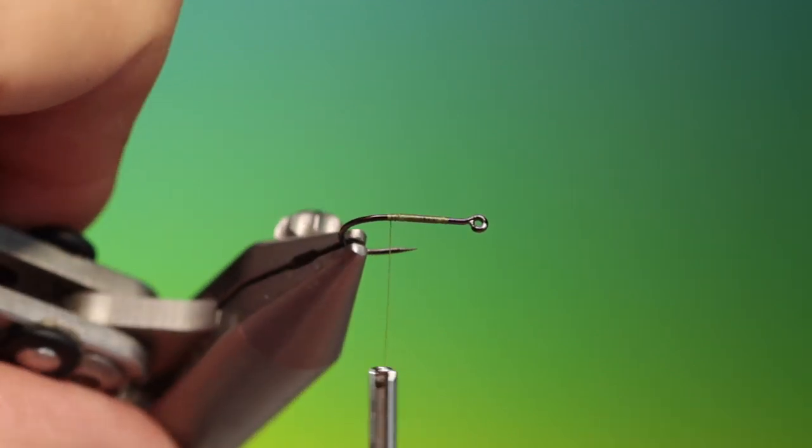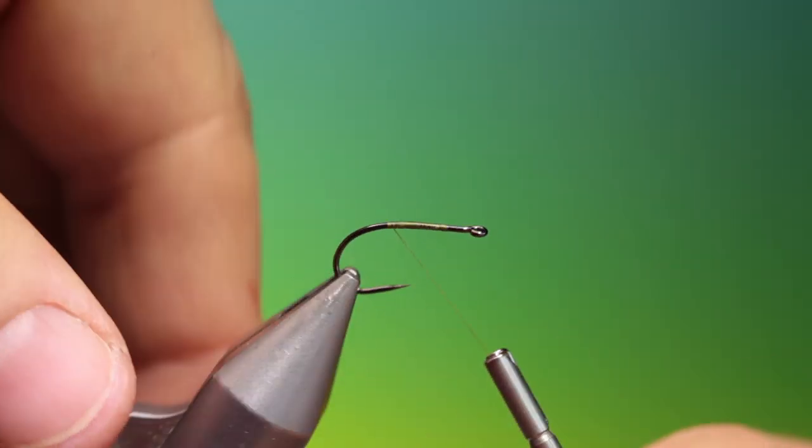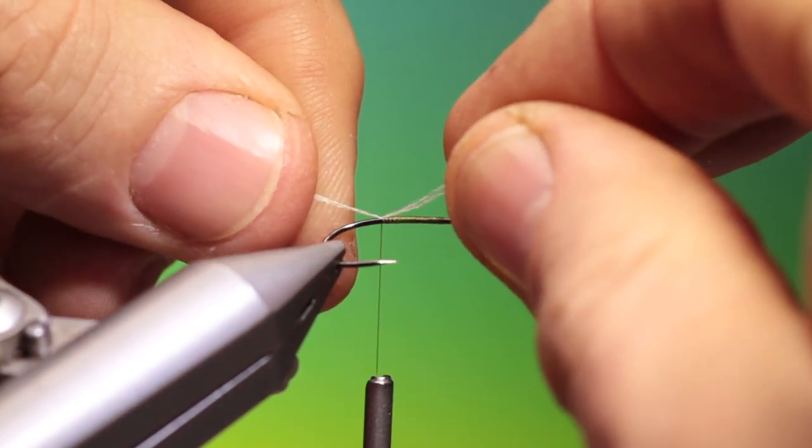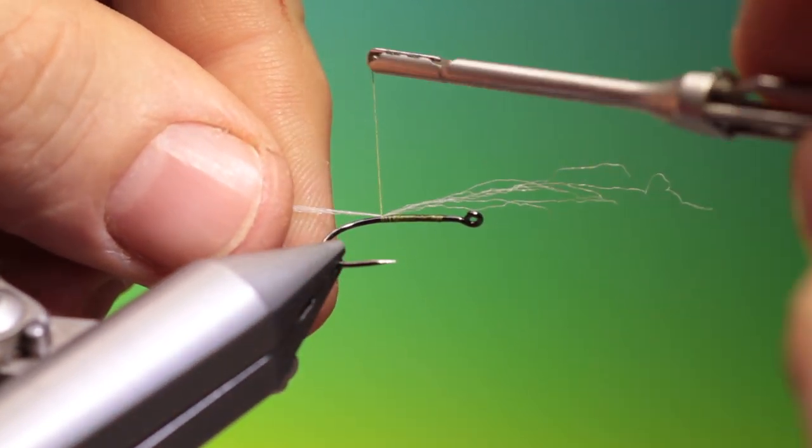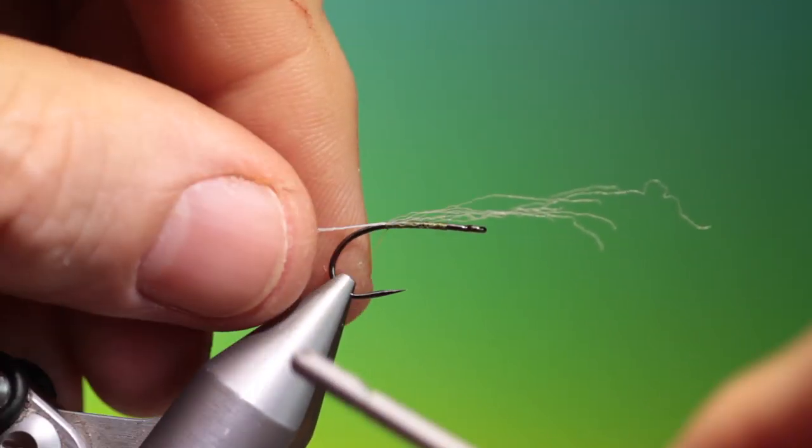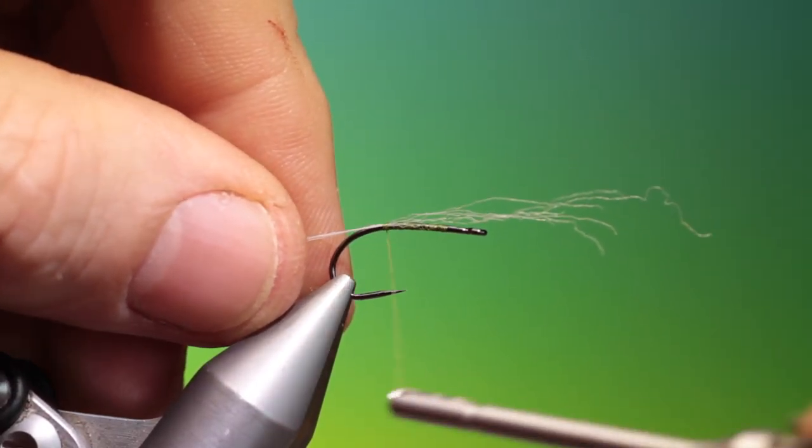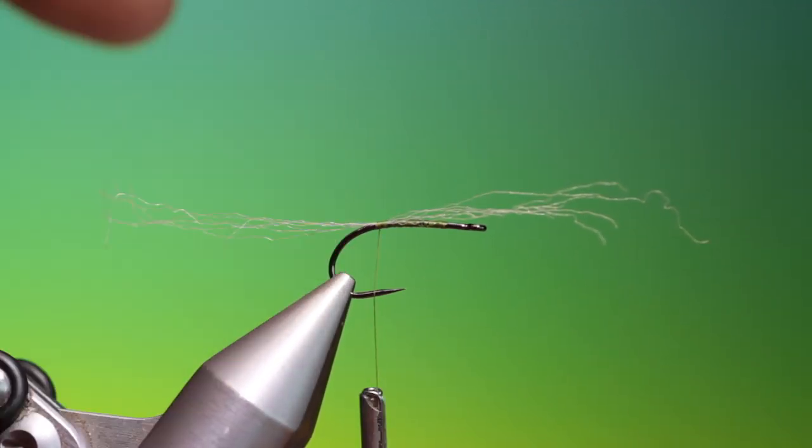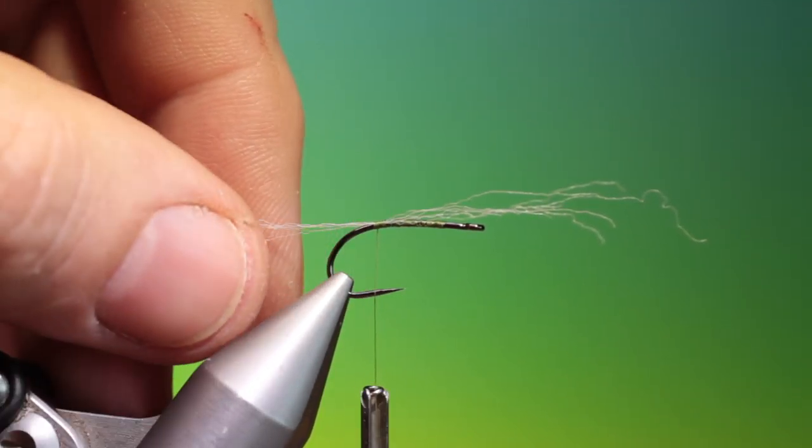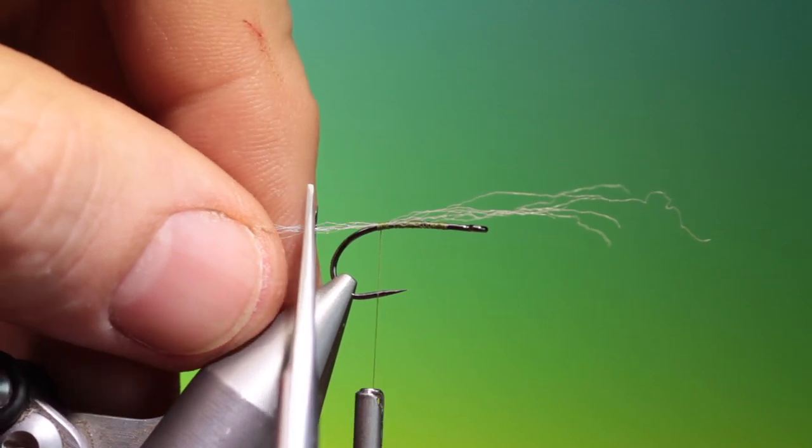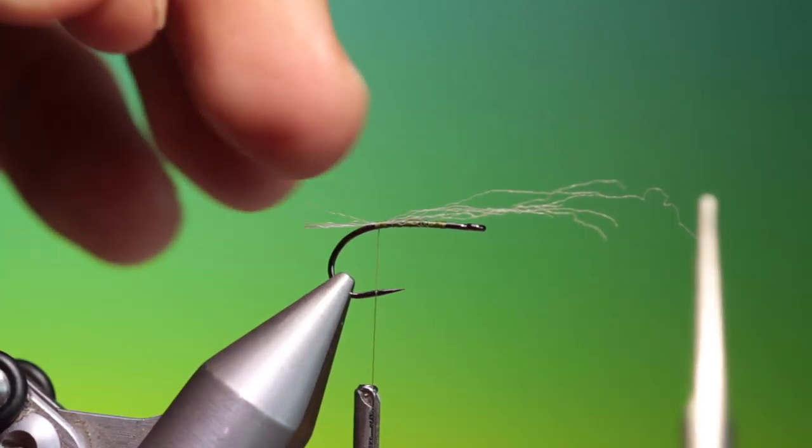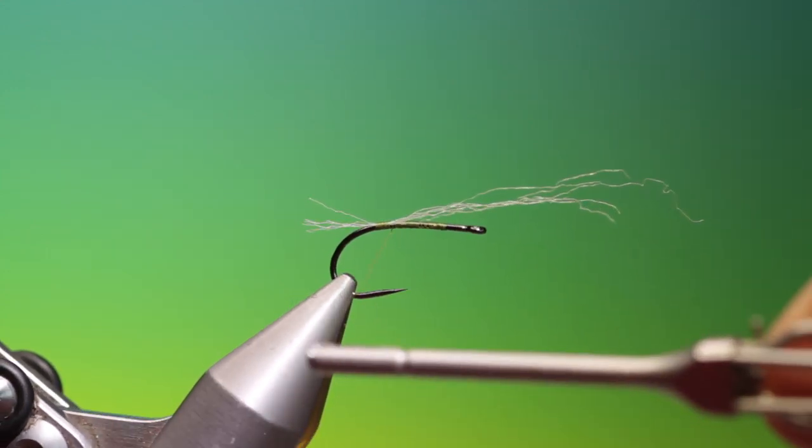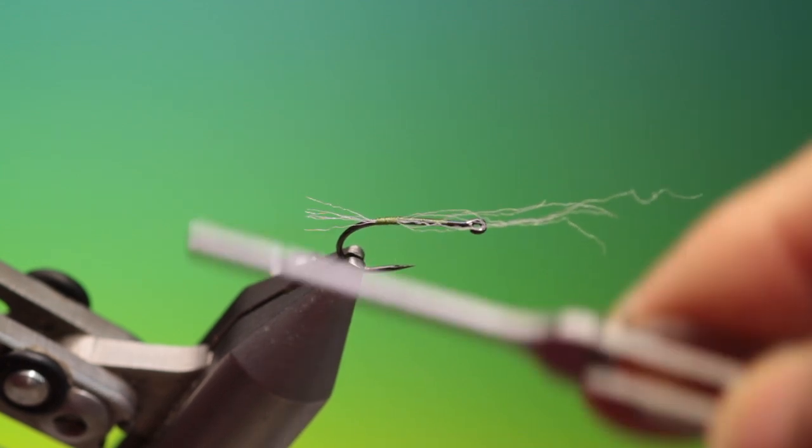What I want is just three or four strands of parapost and we just tack those in there. Don't need more than that for the trailing shuck. Go back to about there and we can trim these off. That's all we need and we can go forward.